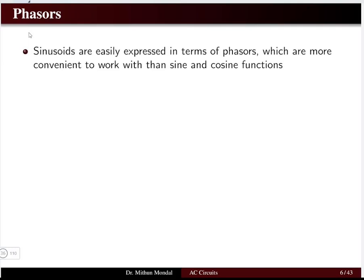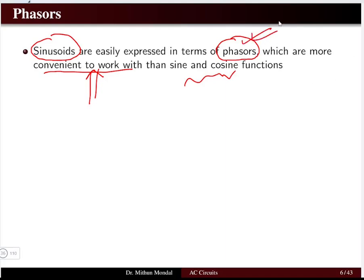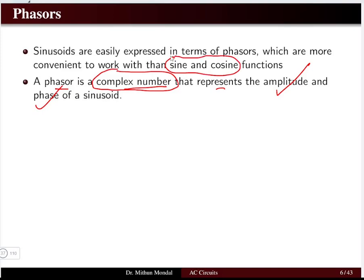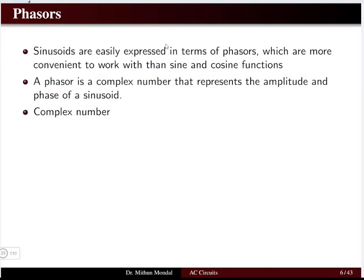Now let us understand the phasor. A sinusoid is generally represented in the form of a phasor because it is convenient to work with sine and cosine functions this way. A phasor is basically a complex number that represents the amplitude and the phase of a sinusoid. Since sine and cosine functions involve complex numbers, we can use Euler's identity to handle them.